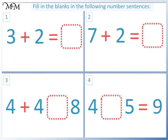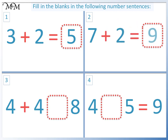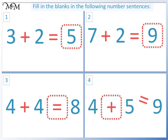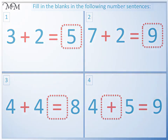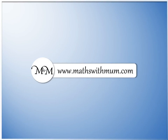Here are some questions for you to try. Fill in the blanks in the following number sentences. Pause the video and have a go. Question one: three add two equals five. Question two: seven add two equals nine. Question three: four add four equals eight. Question four: four add five equals nine. Thank you. If you would like further practice, more questions are available on our website.